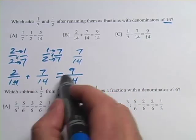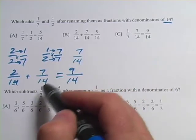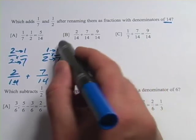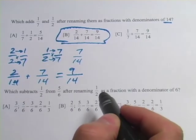You put that over 14, and that is your answer. So we just have to find which one of these choices looks like that. Let's see. Here we have 2/14 plus 7/14 equals 9/14, so it looks like B is our answer there.